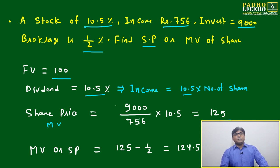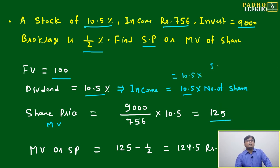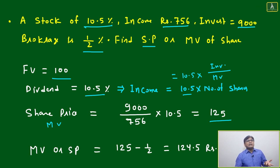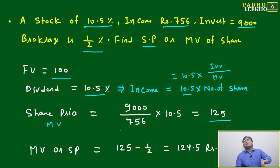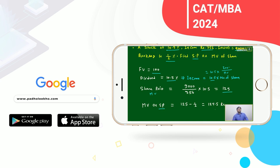Total income equals 10.5 (dividend) multiplied by number of shares. Number of shares equals total investment divided by market value. Share price equals total investment divided by total income, multiplied by dividend — this is not a formula but an understanding. It comes to ₹125. But the final selling price is ₹125 minus half percent brokerage. Half percent of ₹125 is ₹0.5, so selling price equals ₹124.5.